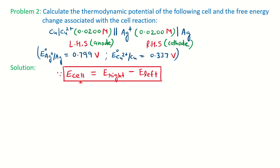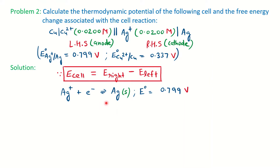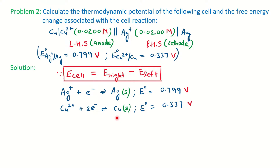The cell potential is: E(cell) = E(right) − E(left), i.e., E(cathode) − E(anode). We write the reduction reactions for both electrodes. For the right electrode: Ag⁺ + e⁻ → Ag, with the given standard potential. For the left electrode: Cu²⁺ + 2e⁻ → Cu, balanced with 2 electrons, with the given standard potential.